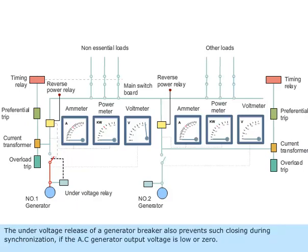The undervoltage release of a generator breaker also prevents such closing during synchronization if the AC generator output voltage is low or zero.